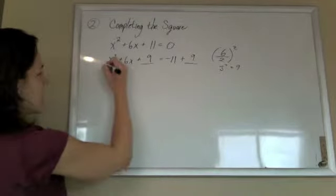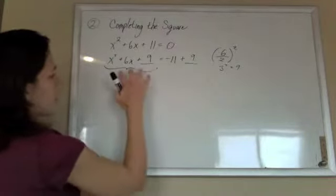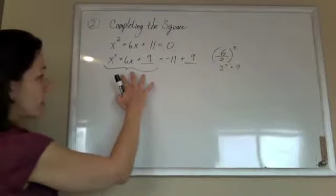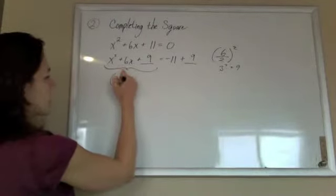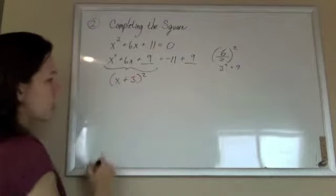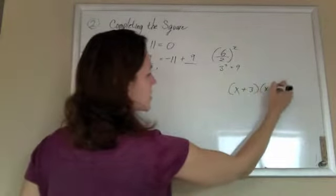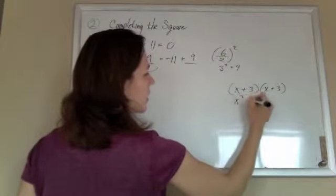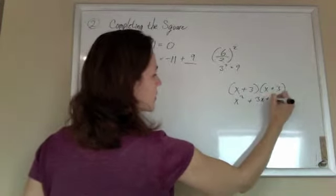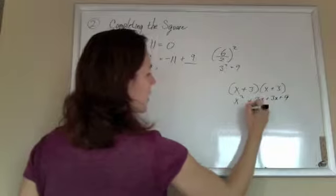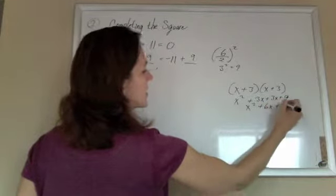The whole reason we did this was now this is a perfect square. If you were to factor this, this is x plus 3 squared. You can check it out over here. x plus 3 squared is x plus 3 times x plus 3: x squared plus 3x plus 3x plus 9. Yeah, that's x squared plus 6x plus 9, right?